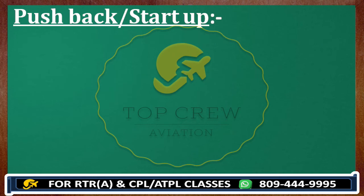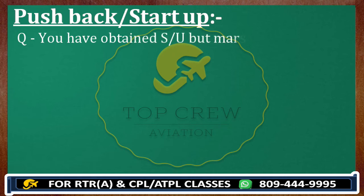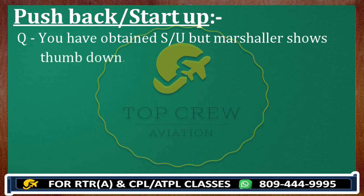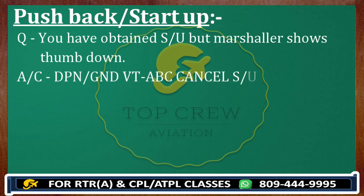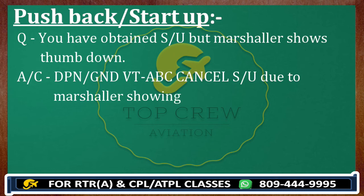You have obtained startup but the Marshaller shows thumb down. So what are you going to do? The Marshaller showing you thumb down means something is wrong. So you call Delhi Ground: this is Victor Tango Alpha Bravo Charlie, cancel startup due to Marshaller showing thumb down. This is how you can take startup and also how you can cancel startup.